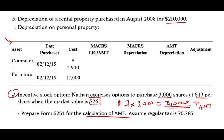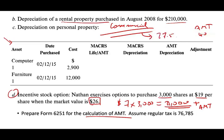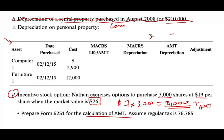Now let's focus on depreciation, starting with the real property. The rental property purchased for $210,000 is commercial, not residential — that's very important. For commercial property, regular tax depreciates over 39 years; for AMT, it's 40 years. Congress said the difference is only one year, so no adjustment is required. If it were residential at 27.5 years converted to 40 years for AMT, it would make a significant difference. But since it's commercial, we move on.